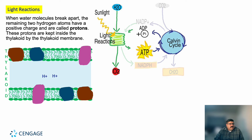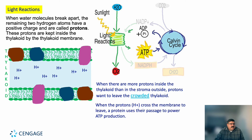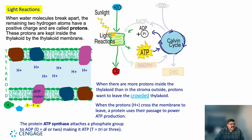When the water molecule breaks apart, the remaining two hydrogen atoms have a positive charge and are called protons. These protons are kept inside the thylakoid by the thylakoid membrane. When there are more protons inside the thylakoid than in the stroma outside, protons want to leave the crowded thylakoid. As hydrogen molecules cross the membrane to leave, a protein uses their passage to power ATP production. As the hydrogen molecules leave the thylakoid space, ATP synthase attaches a third phosphate group to ADP, making it ATP.